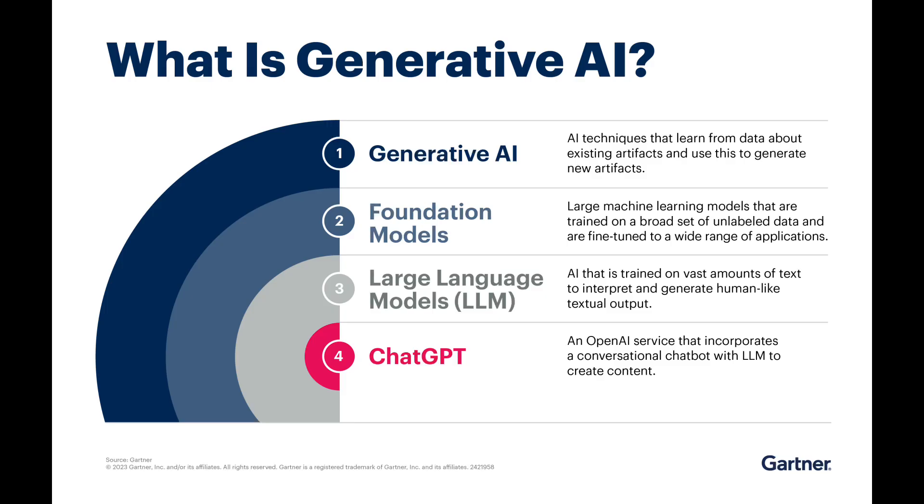If you think about ChatGPT, it is a tool built on this technology. If you use this technology, you can create applications like ChatGPT. Generative AI is one of the hardest skills in 2024 and 2025. If you understand it, you can fine-tune models and apply them to business use cases. If you learn both Generative AI and NLP, there is a high chance of getting a job.